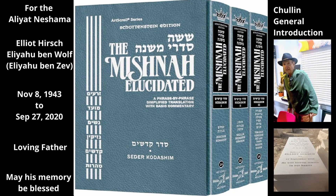Tractate Chulin, General Introduction. The name of this tractate, Chulin, literally means ordinary or profane, and refers to things that are ordinary in the sense of not being sacred.